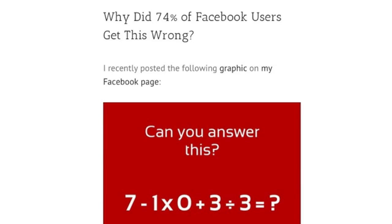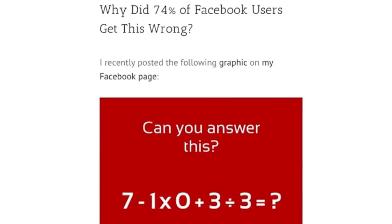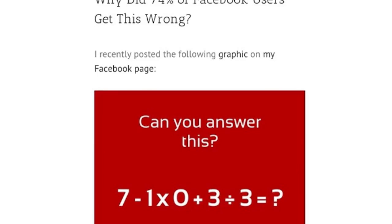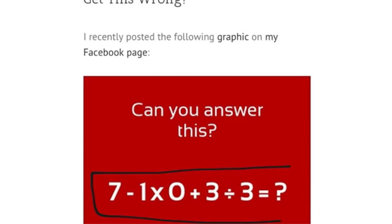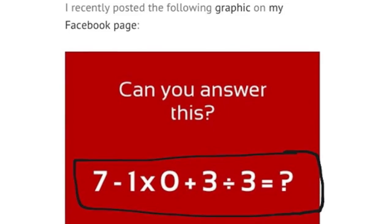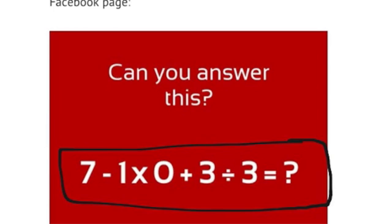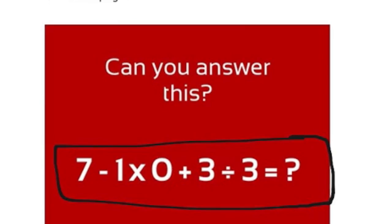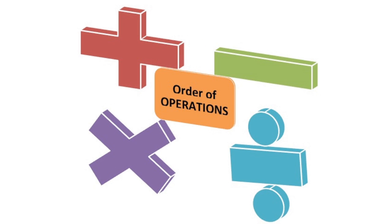Right here on this slide we have a question that was posted on Facebook, and 74% of the users that actually responded to it got it wrong. This is a question posted by classroomprofessor.com: 7 minus 1 times 0 plus 3 divided by 3. Now why did so many people get it wrong? Because they did not follow the correct order of operations. Today I'm going to talk to you about order of operations.